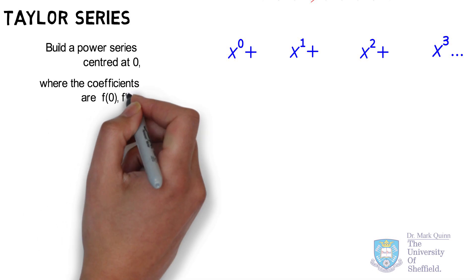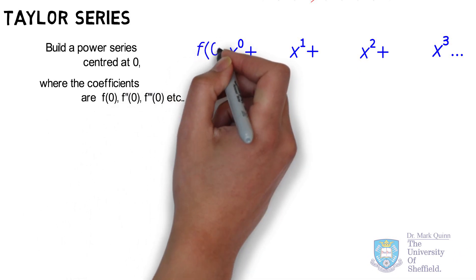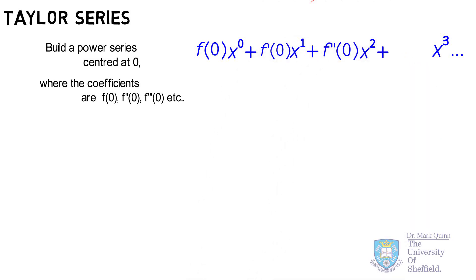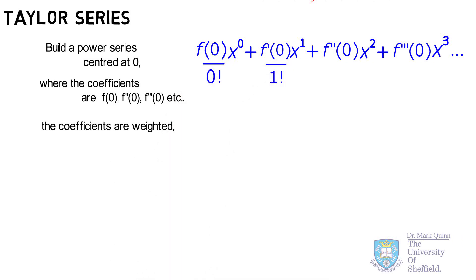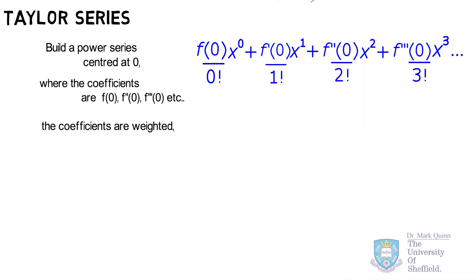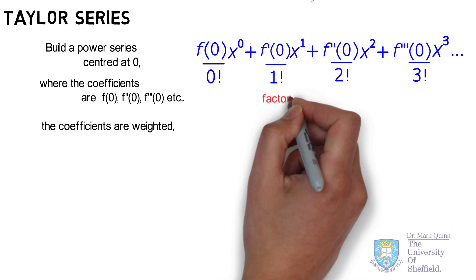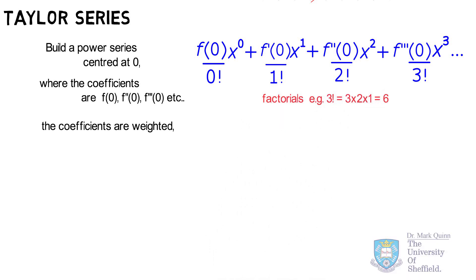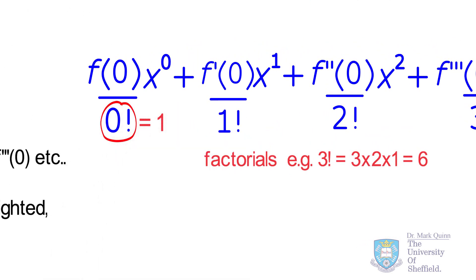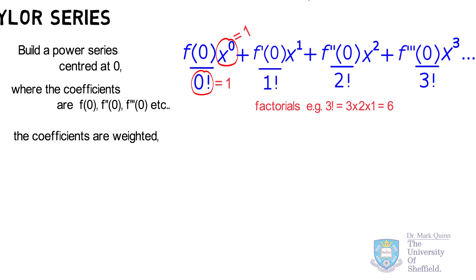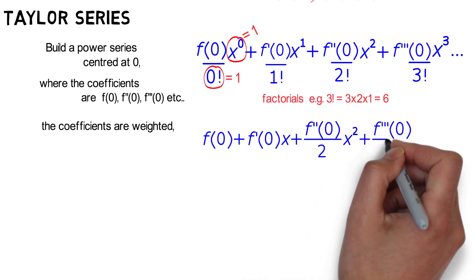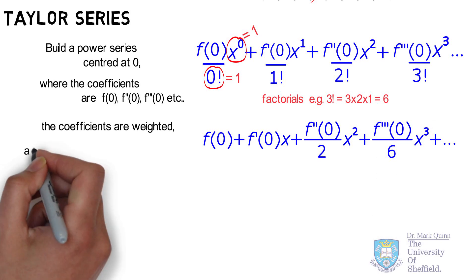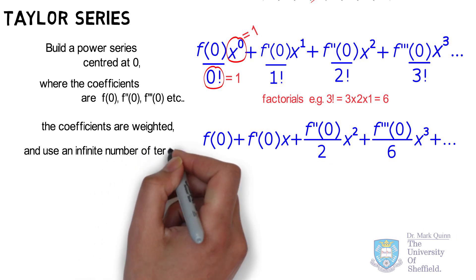The Taylor series approximates complex functions by adding increasing higher orders of derivatives and x terms, weighted by a decreasing factor of 1 over n factorial. To create any Taylor series we first start by building a power series centered at zero, then add the coefficients, which are the derivatives of the function. The zero-order derivative is just the function itself, evaluated at x equal to zero where the series is centered. Next we weight the coefficients by the order factorial — for example, the factorial of 3 is 3 × 2 × 1 = 6.